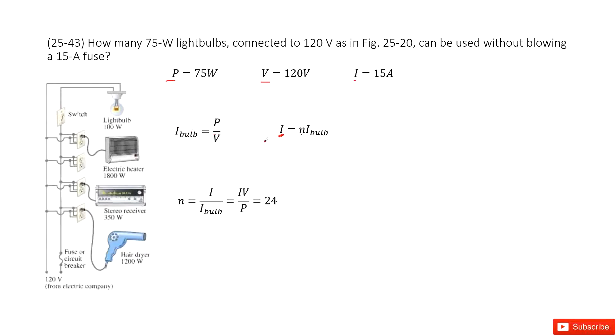This is the, then the total current is given. So it is very easy for you to get the number n. So number n is use the total current divided by the current for each light bulb, and then input each light bulb current as the power divided by voltage, you get the function look like this one, input the given quantity, get the final answer as 24. Thank you.